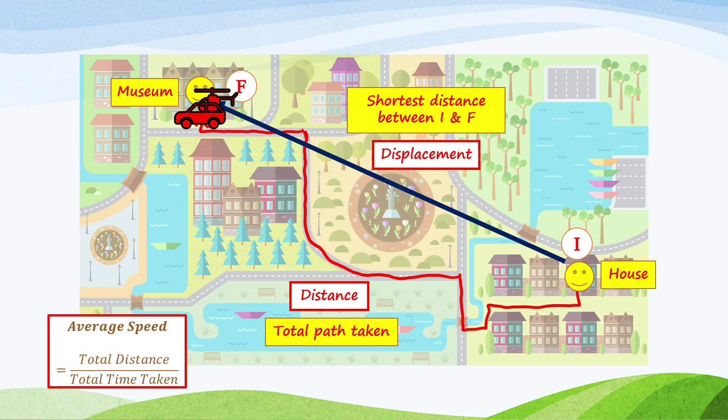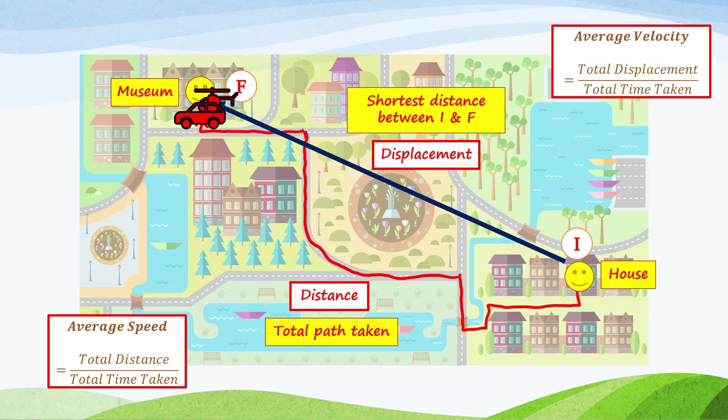And here comes a new term: average speed. Average speed is the total distance divided by total time taken. And average velocity: average velocity is the total displacement divided by the total time taken. The difference between average speed and average velocity is that average speed uses the longer path which is the distance, whereas average velocity uses the shortest distance between initial and final point, which is the displacement.